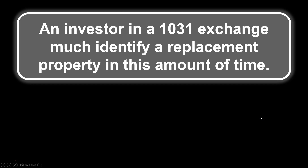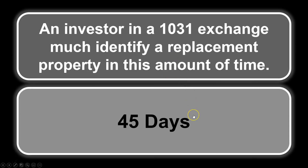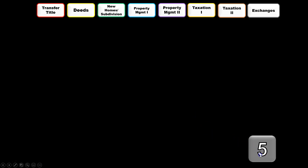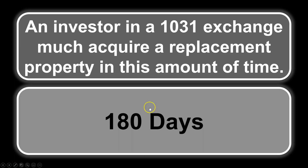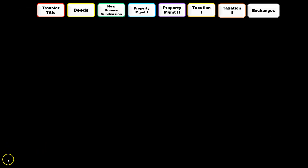An investor in a 1031 exchange must identify a replacement property within 45 days — that is the identification period. An investor in a 1031 exchange must also acquire the replacement property within 180 days. So the identification period is 45 days and they must close and acquire the replacement property in 180 days. That's it for this Jeopardy — hope you enjoyed it.